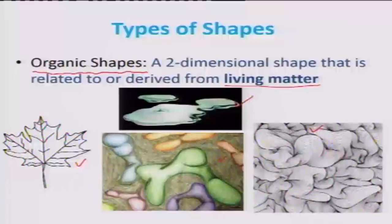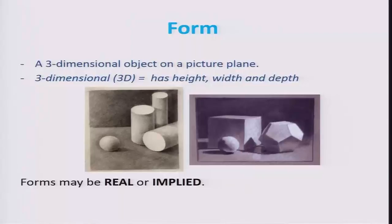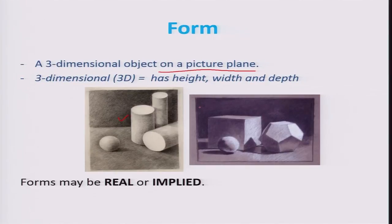There are of course three-dimensional forms, which describe a three-dimensional object on a picture plane. For example, forms of a cylinder or a spherical object.